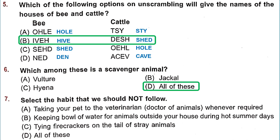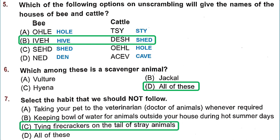Question 7: Select the habit we should not follow. Taking your pet to the vet whenever required — very good. Keeping a bowl of water for animals outside your house during hot summer days — also good. Tying firecrackers on the tail of stray animals — no, we should not do this as it can injure or burn them. Option C is the answer.